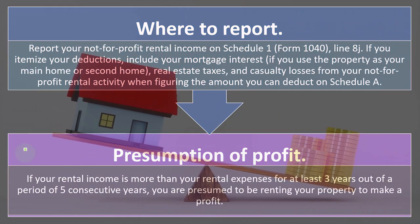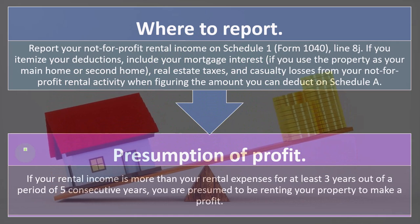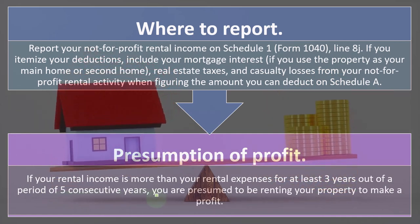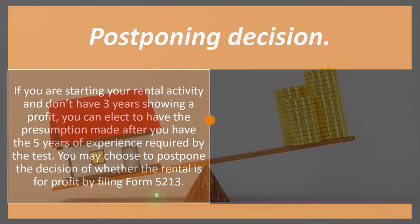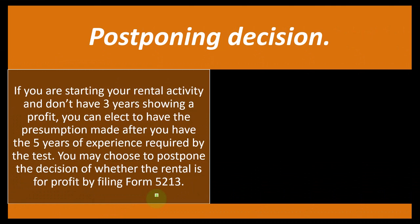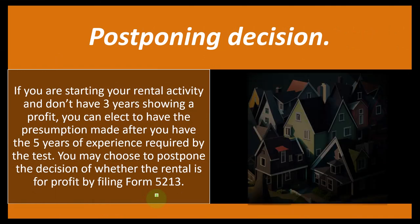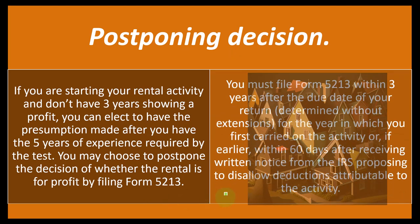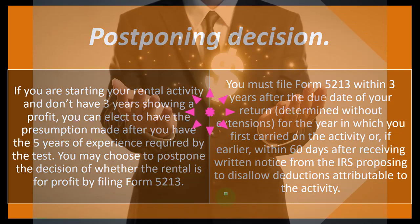Postponing decision: if you are starting your rental activity and don't have three years showing profit, you can elect to have the presumption made after you have the five years of experience required by the test. You may choose to postpone the decision of whether the rental is for profit by filing Form 5213. You must file Form 5213 within three years after the due date of your return — with extensions — for the year in which you first carried on the activity, or within 60 days after receiving written notice from the IRS proposing disallowed deductions attributable to the activity.